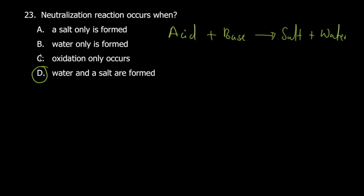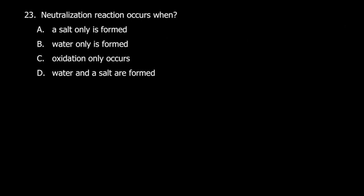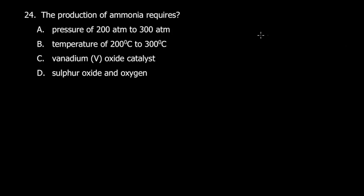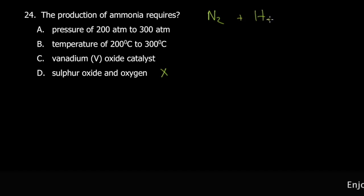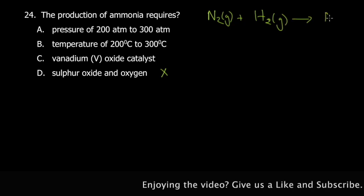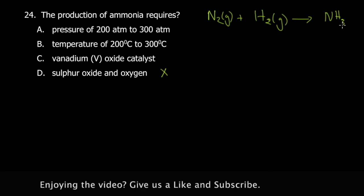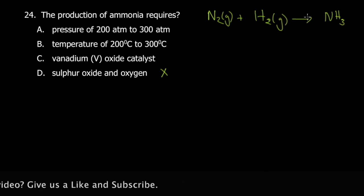Question 24: the production of ammonia. If you don't know much, use elimination. Sulfur oxide and oxygen are not involved — when producing ammonia you need nitrogen gas and hydrogen gas to get NH₃.